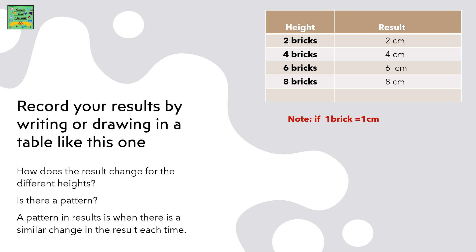Record your results by writing or drawing in a table like this one. How does the result change for different heights? Is there a pattern? A pattern in results is when there is a similar change in the result each time.